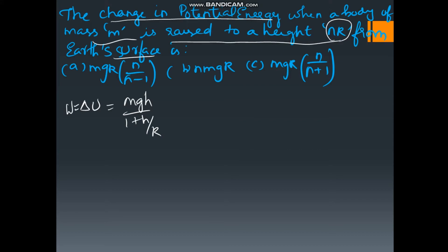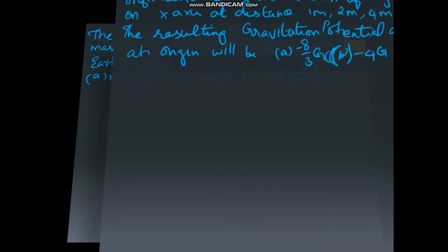So change in potential H is nR. They are given in the question. So you substitute the thing MGH NR divided by 1 plus NR by R. Which is MGR into N by N plus 1. So C option is the right answer.